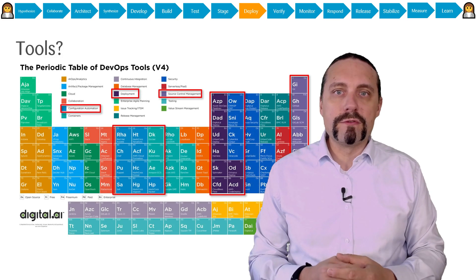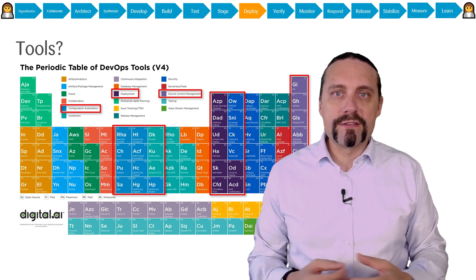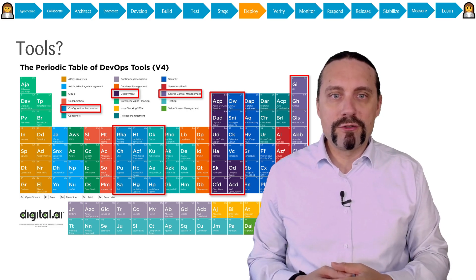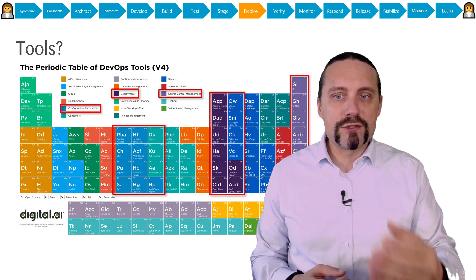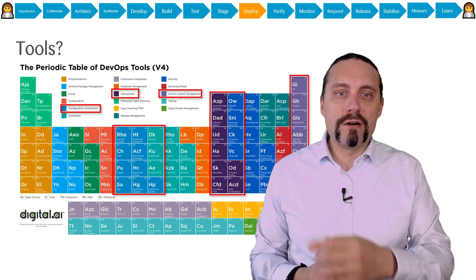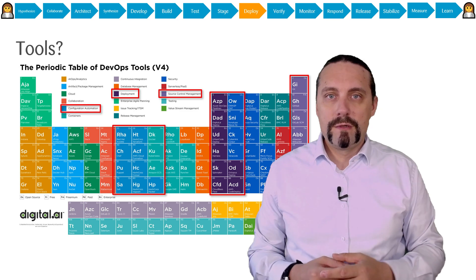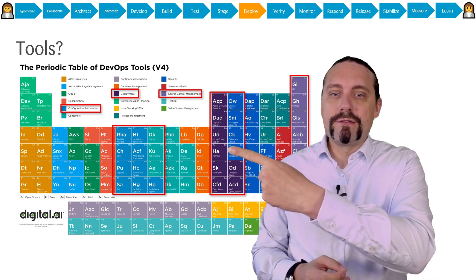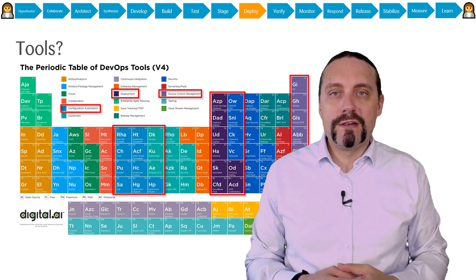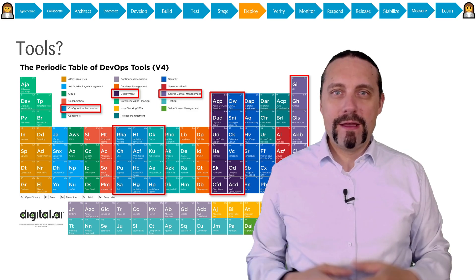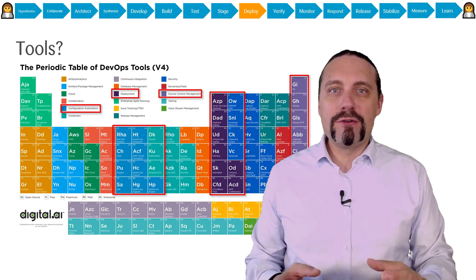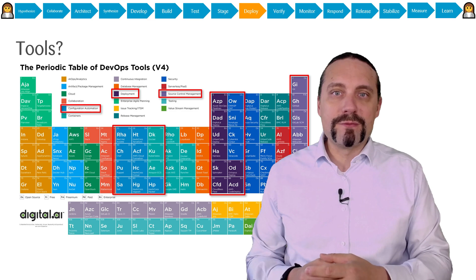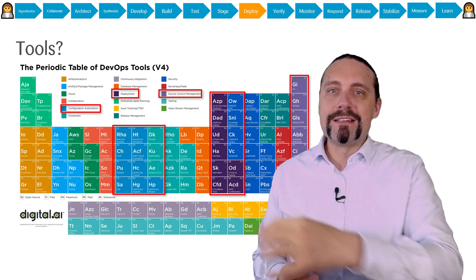There are many tools that support continuous deployment to production. Using the periodic table of DevOps tools, we need a source control management tool to store all artifacts. We also need deployment automation tools, and when it comes to automating infrastructure, we need configuration automation tools — all of which you can see listed here.